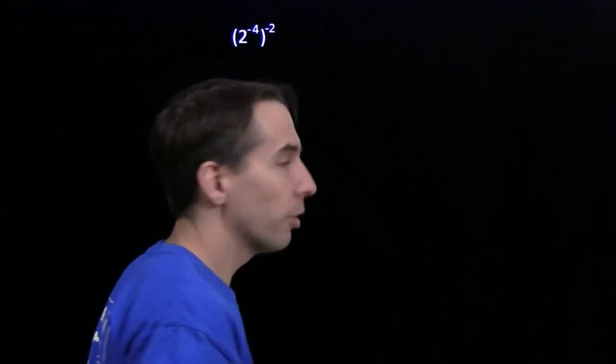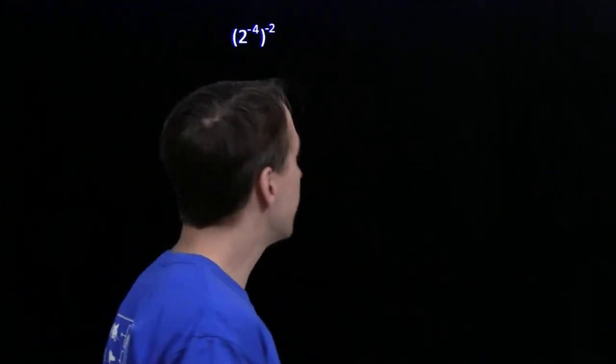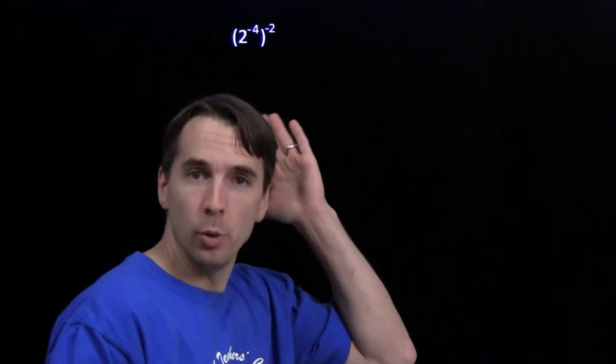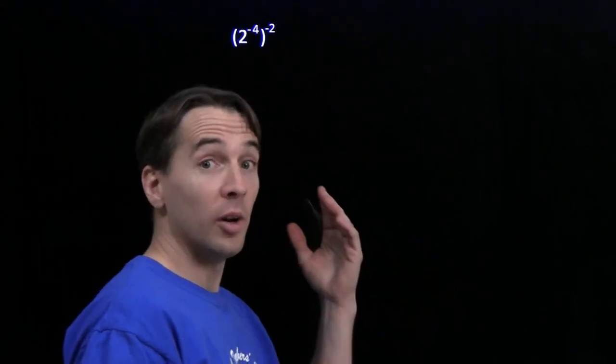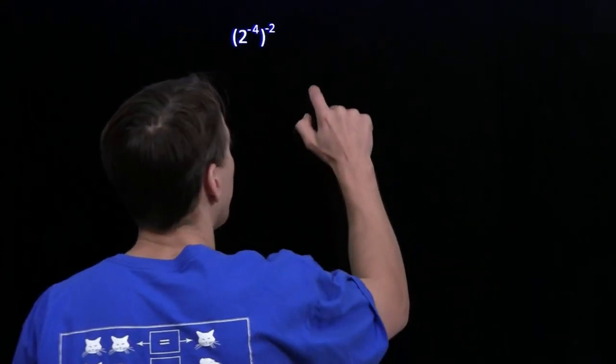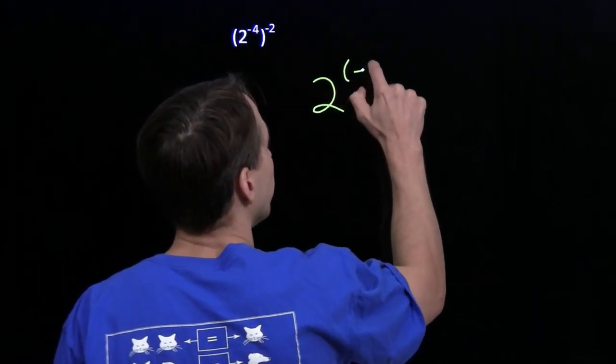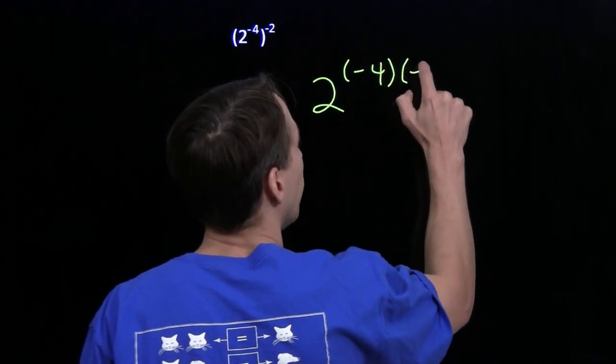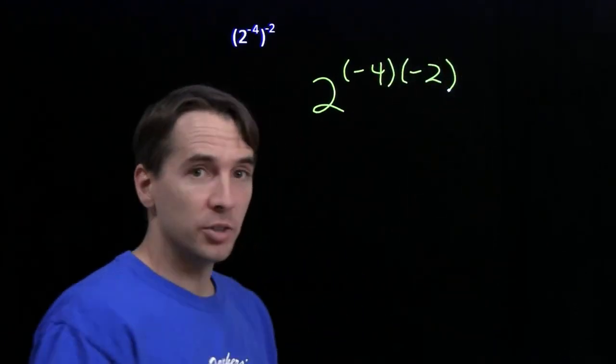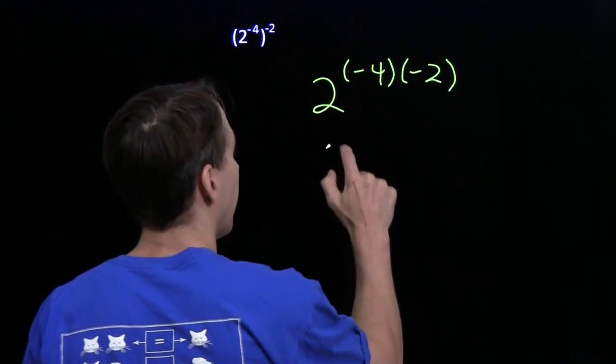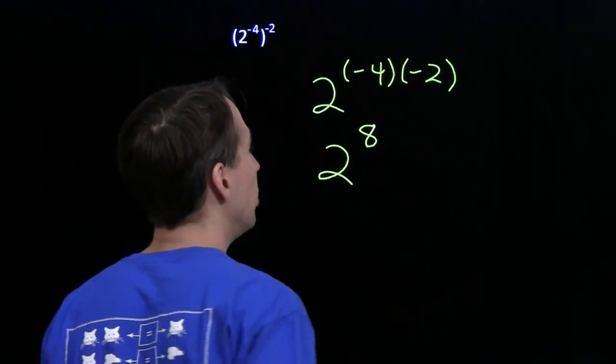2 to the negative 4th, and that whole thing raised to the negative 2. Well, that's just a power to a power, and we know how to handle that. We have a power to a power, we multiply the exponents. So we have 2 raised to the product minus 4 times minus 2. Minus 4 times minus 2, that's just 8. So we have 2 to the 8th.